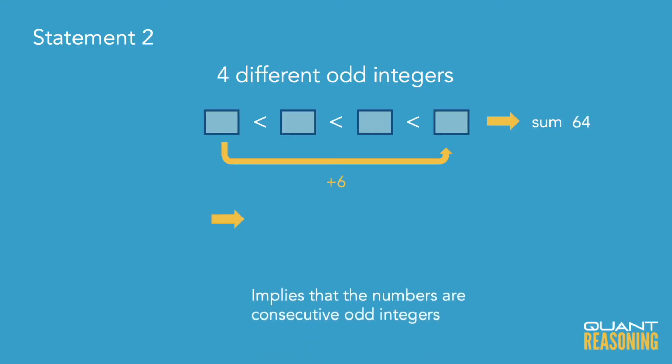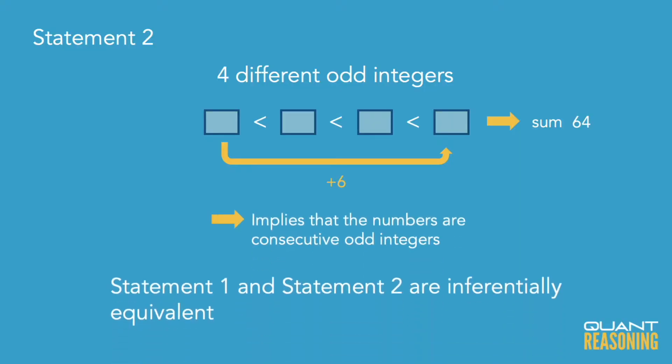And conversely, if we know that we have four different odd integers such that the greatest is six more than the smallest, then of course they have to be consecutive odd integers — because we know that they're all different, we know they're all odd, and we know that the greatest is six more than the smallest. So what does this mean? It means that these two statements are inferentially equivalent. We can infer statement two from statement one, and we can infer statement one from statement two.